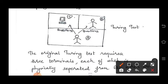How is this done? The original Turing Test requires three terminals — Terminal 1, Terminal 2, and Terminal 3. The original Turing Test needs three terminals, each of which is physically separated from the other two.